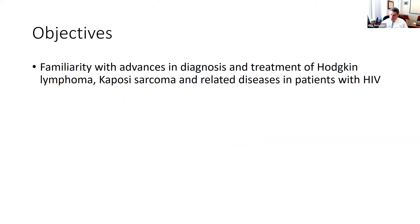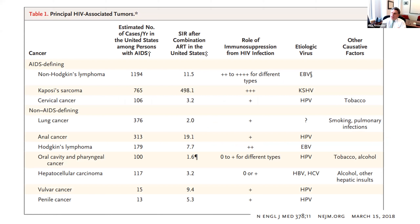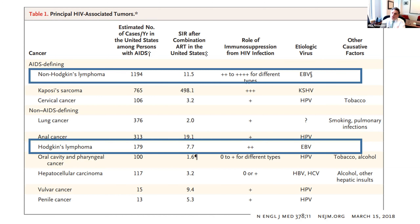I'm going to touch on aspects of lymphoma and Kaposi sarcoma and some related KSHV problems. This table summarizes AIDS-defining and non-AIDS-defining cancers in the era of effective antiretroviral therapy. Non-Hodgkin's lymphomas used to be much more common than they are, but they're still about tenfold more common than in the general population. Hodgkin's lymphoma is not an AIDS-defining cancer, but is also substantially increased in our HIV population.